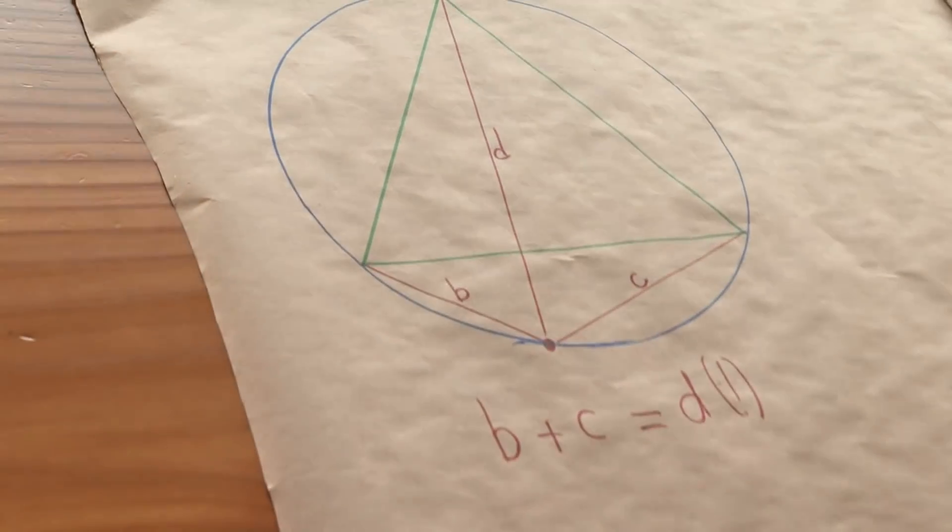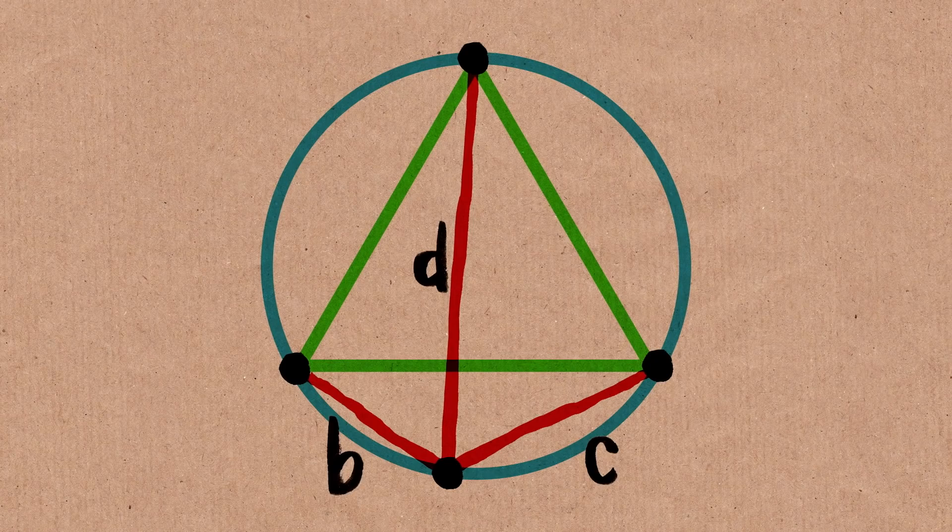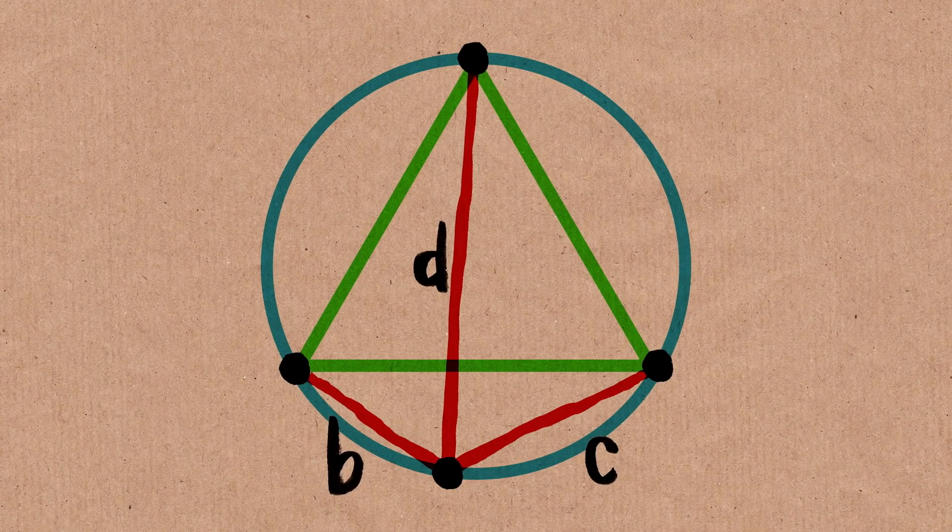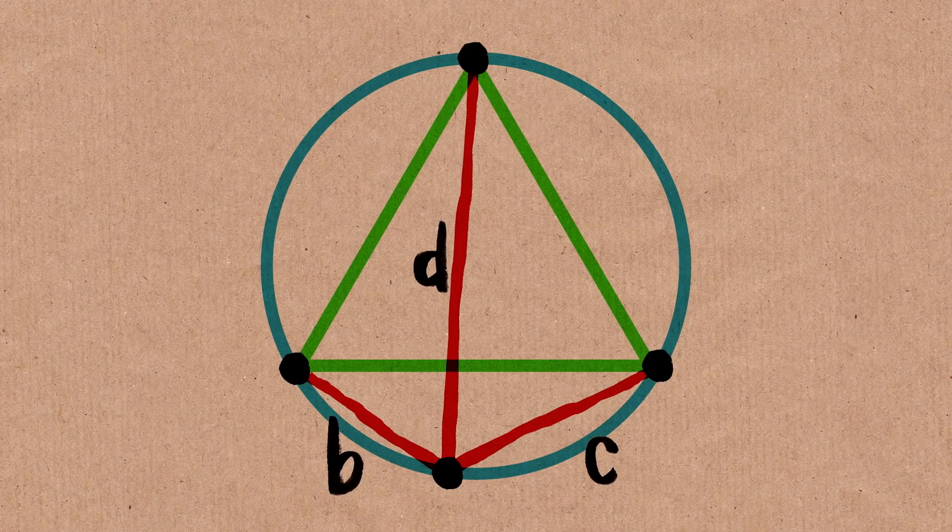Do we see a quadrilateral? Yeah. Absolutely. I need those green sides. I don't know what they are, but it looks like calling them all A's is good, because this is an equilateral triangle.